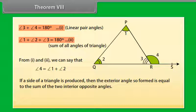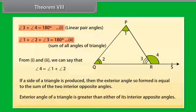It is obvious from this theorem that an exterior angle of a triangle is greater than either of its interior opposite angles. Now let us solve some examples based on this theorem.